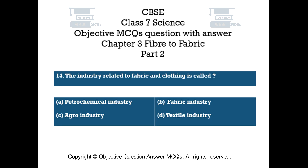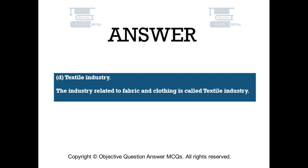Question number 14. The industry related to fabric and clothing is called. Option A: Petrochemical industry. Option B: Fabric industry. Option C: Agro industry. Option D: Textile industry. The right answer is Option D — Textile industry. The industry related to fabric and clothing is called textile industry.